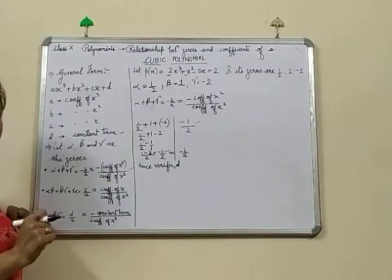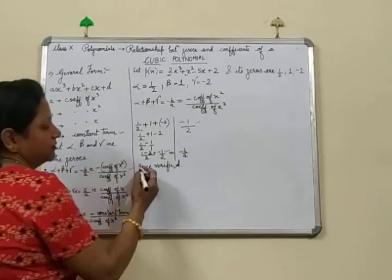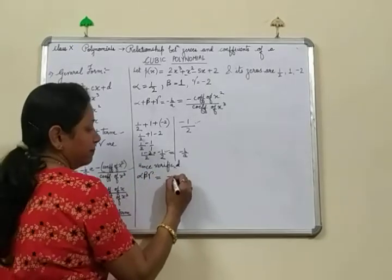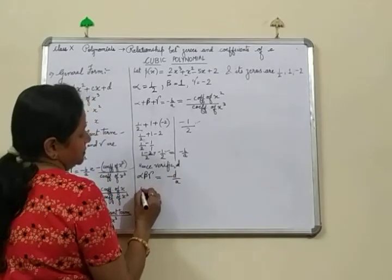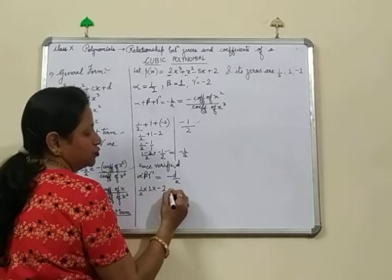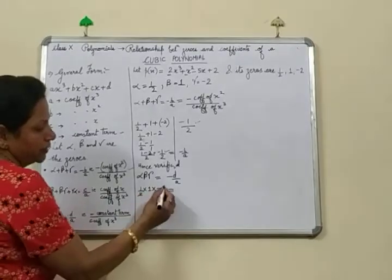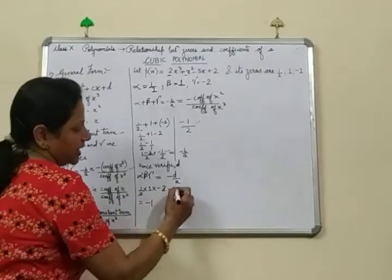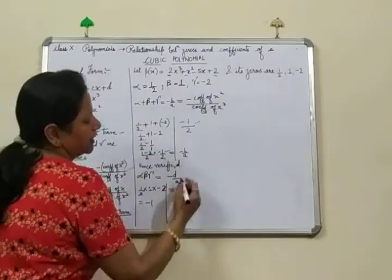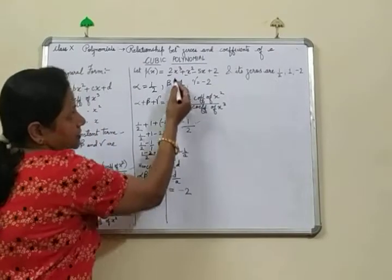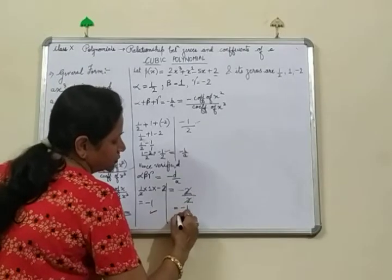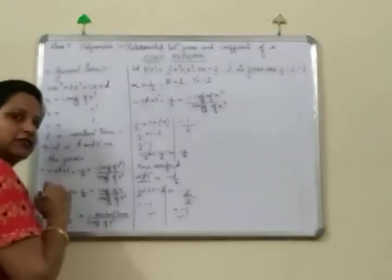Similarly, let us verify the product: alpha times beta times gamma. This should equal minus d upon a. Alpha is 1/2, beta is 1, and gamma is minus 2. Multiplying: (1/2)(1)(minus 2) — the 2s cancel — gives minus 1. On the right side, minus d upon a: d is the constant term 2, so minus 2 upon 2, which also equals minus 1. Hence, product is also verified.